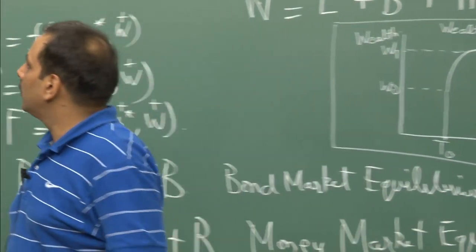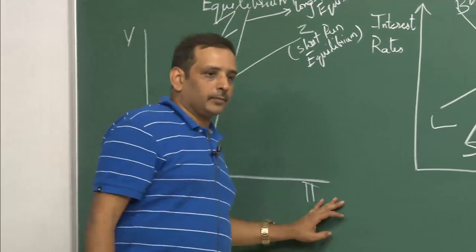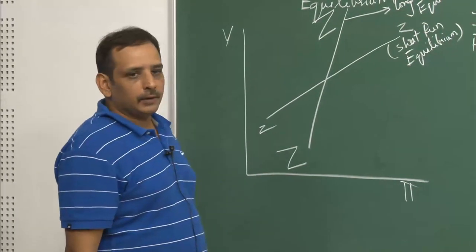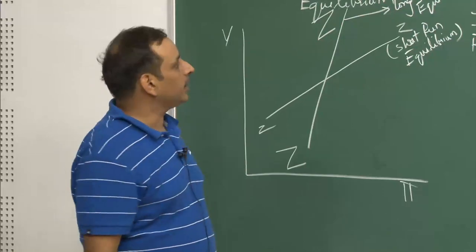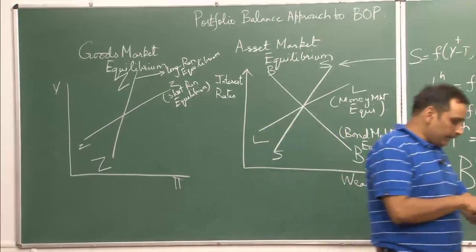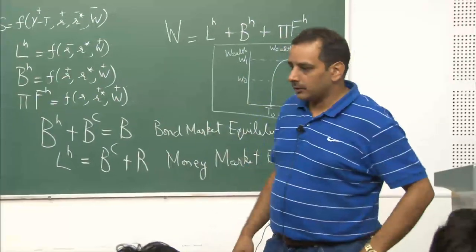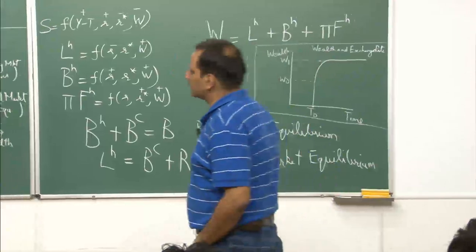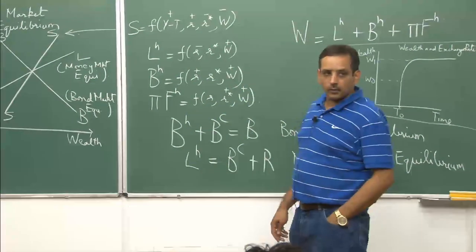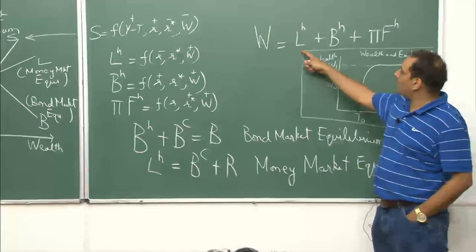Good afternoon. We have been discussing the asset market approach to balance of payment, which also comes with another name called the portfolio balance approach to balance of payment. Here, each household is assumed to be risk averse, so the assets that he will hold are domestic and foreign bonds and money.